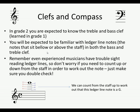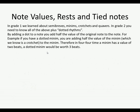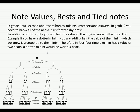On to note values, rests and tied notes. In Grade 1 we learned about semi-breves, minims, crotchets and quavers. In Grade 2 you need to know all of these plus dotted rhythms. By adding a dot to the right-hand side of a note, you add half the value of the original note. For example, a dotted minim adds half the value of the minim — which is a crotchet — to the minim. Therefore in 4/4 time, a minim has a value of 2 beats, so a dotted minim would be worth 3 beats.